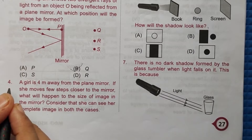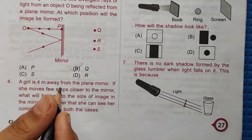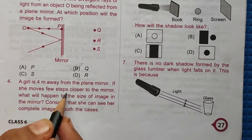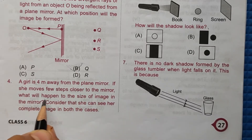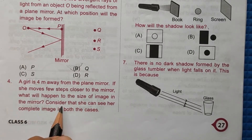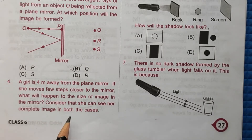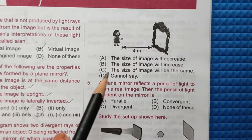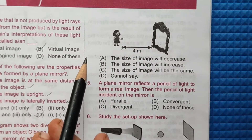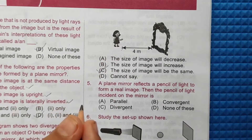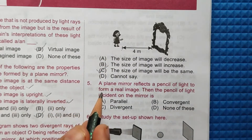Fourth question: a girl is four metres away from a plane mirror. If she moves a few steps closer to the mirror, what will happen to the size of her image? Considering she can see her complete image in both cases, if the girl moves closer to the mirror, the size of the image will remain the same. So the correct answer is option C.